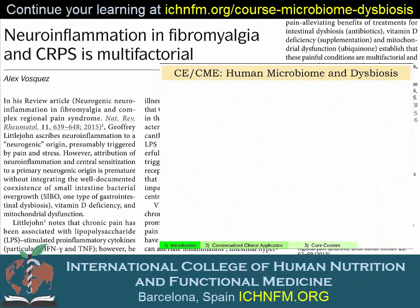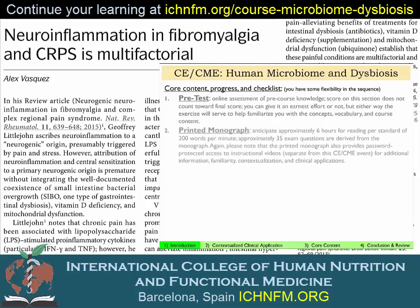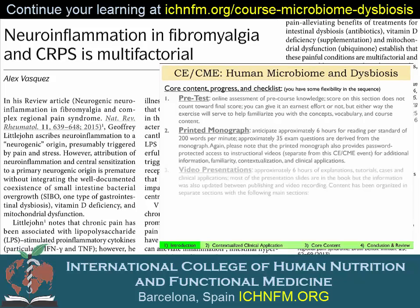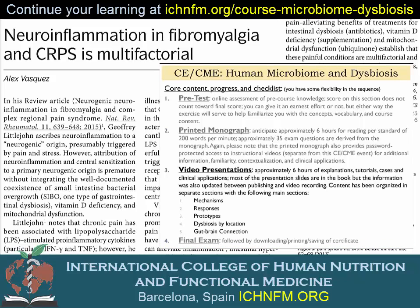This slide provides a listing of the core content, and you might also use this as a mental checklist. We start with a pretest that allows us to assess baseline knowledge and the overall effectiveness of this learning program. Then we have the printed monograph, and then the video series and video presentations. After we've gone through the pre-test, the printed monograph, and the video presentations, we access the final exam, which gives you a chance to complete the program and print off your certificate of achievement.